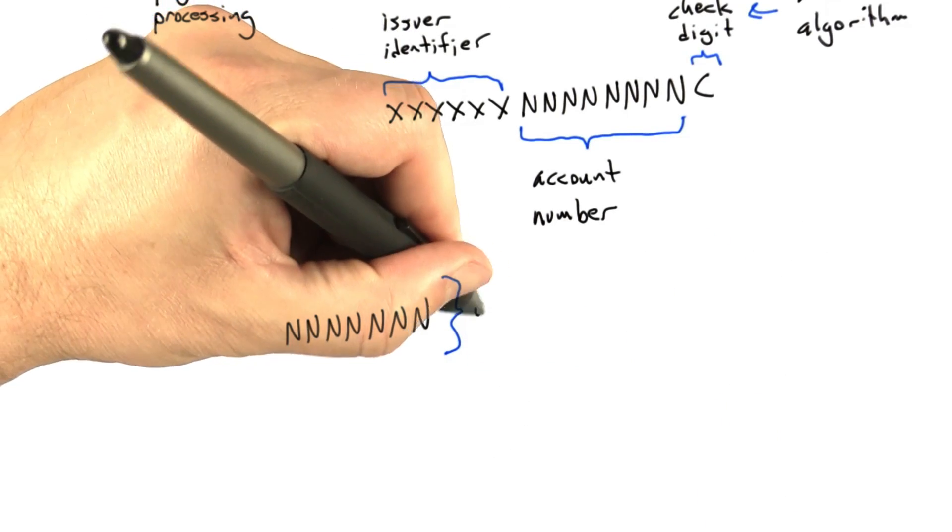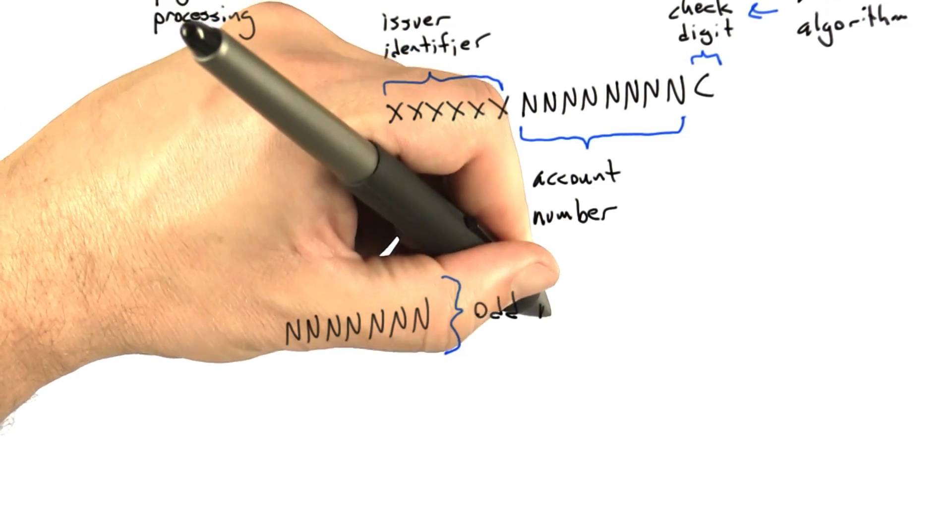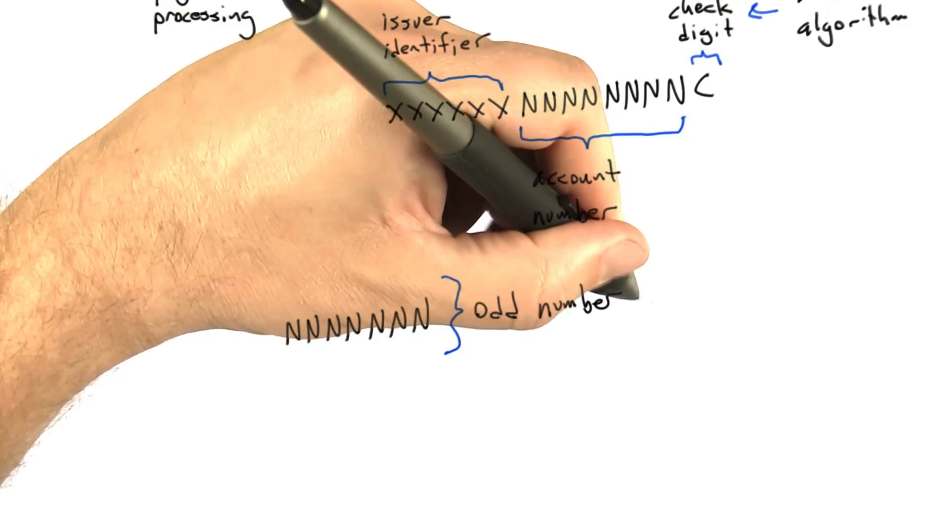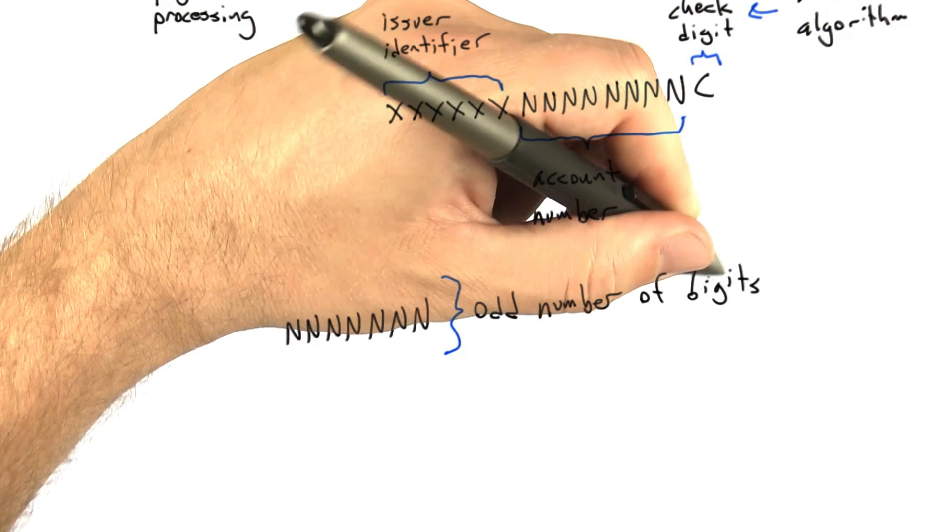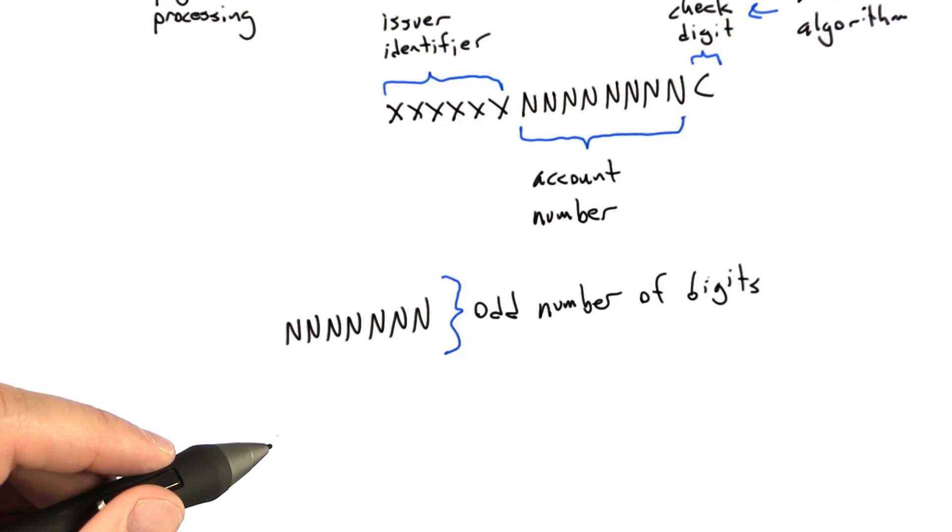Let's look at how to use Luhn's algorithm to calculate a check digit. So what we're going to have is a sequence of numbers, and this will work for any number. And now there are two cases. If there's an odd number of digits, we're going to do one thing, and if there's an even number, there will be a slight variation.